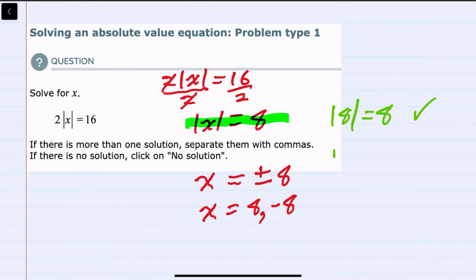However, it's also true if we had a negative 8 inside of the absolute value. The absolute value of negative 8 is 8, so we have two solutions. The x could be 8 or the x could be negative 8.